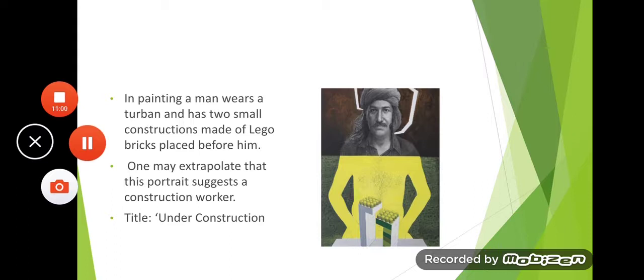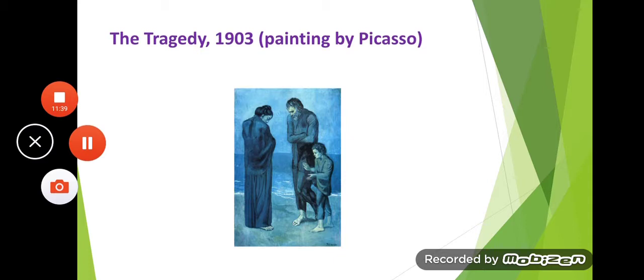The 'Under Construction' title is used ironically. It is not about a building or architecture under construction. The artist is talking about the human being — the human personality, especially of male members — and how their construction is carried out by society, as society imposes different responsibilities, ethics, and rules on personalities, especially on male members.